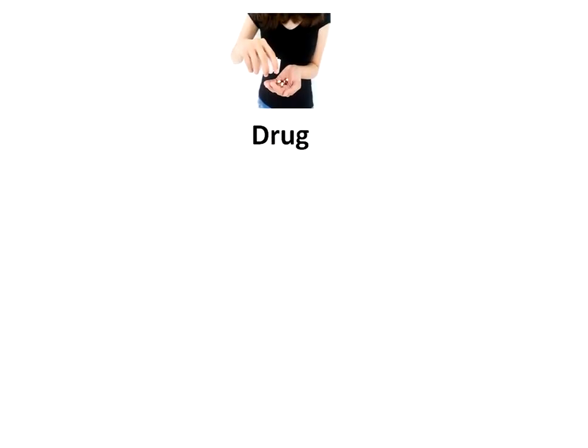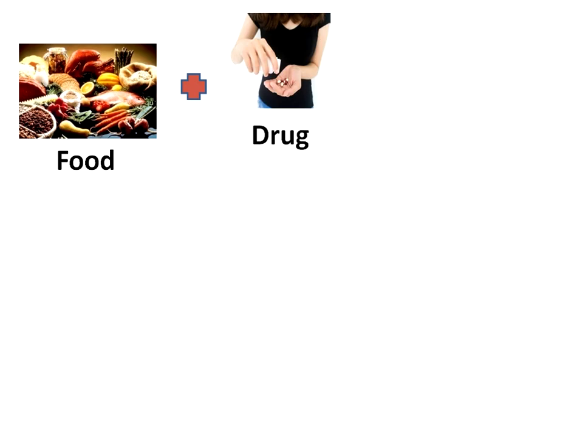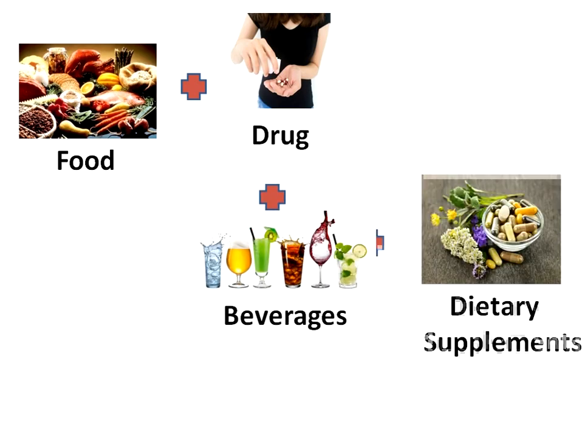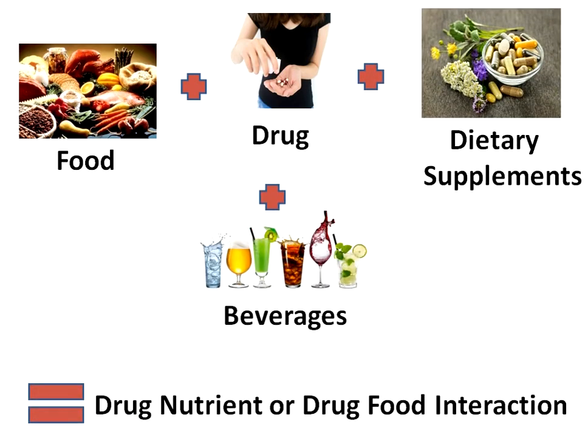Drug-food interaction, or drug-nutrient interaction, is a change in a drug's effect on the body when the drug is taken together with certain foods, beverages, or dietary supplements. For example, mixing alcohol with metronidazole can induce headaches, stomach cramps, nausea, and vomiting.